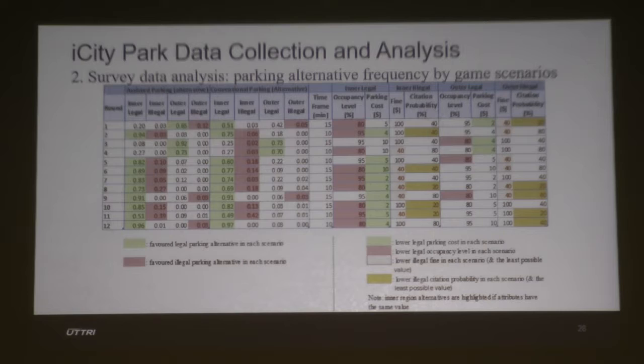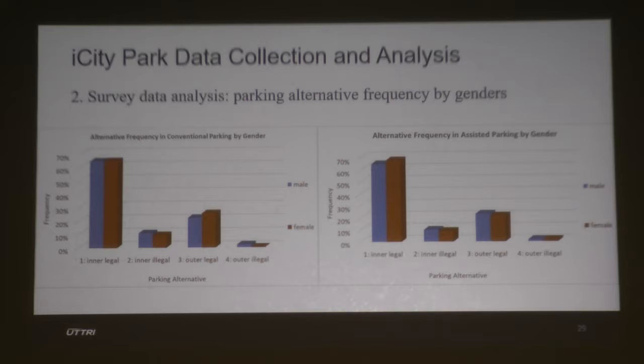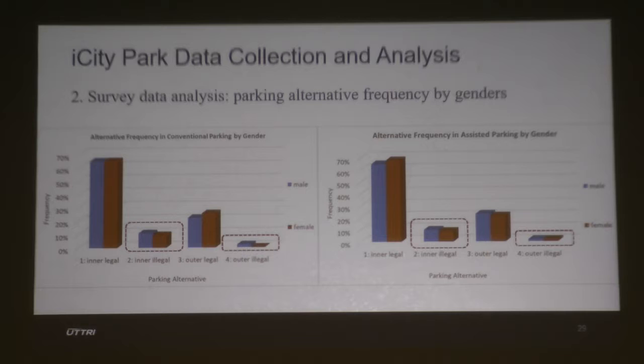The slide shows parking alternative choices by gender. In both conventional and assisted parking, males and females have similar parking frequency distributions overall. However, males have a higher frequency of choosing illegal parking spots than females, which is a reasonable finding also reflected in the later model results.